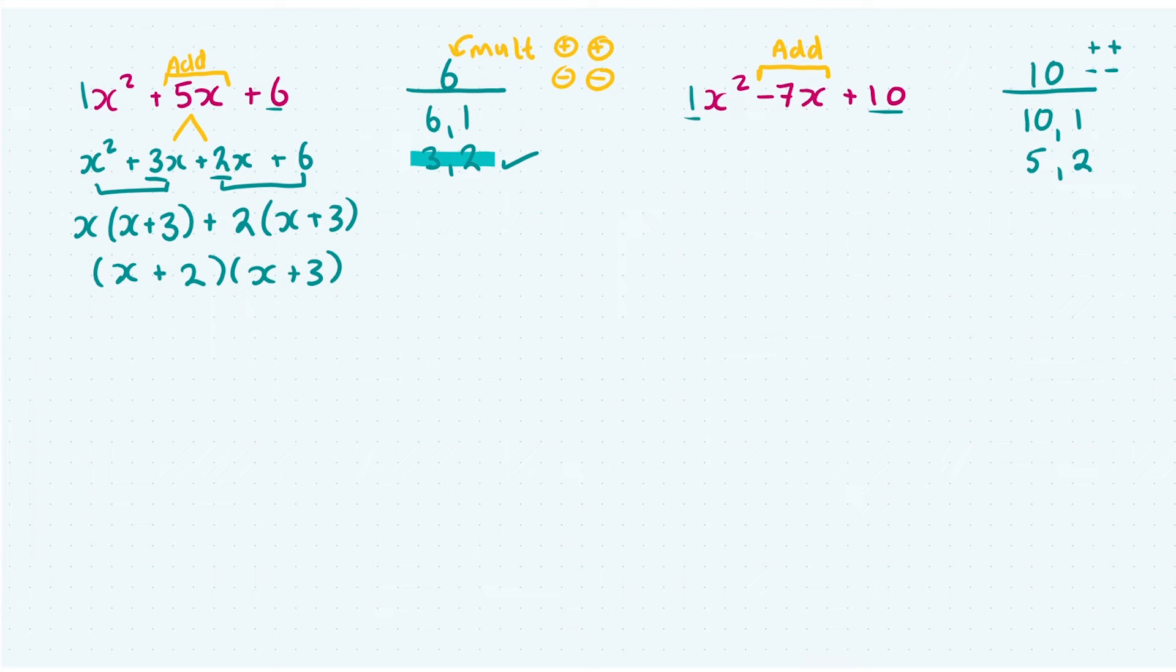Or does 5 plus 2, or minus 5, and minus 2 give us that? Well, it would be minus 5 and minus 2, as they'll add up to minus 7.